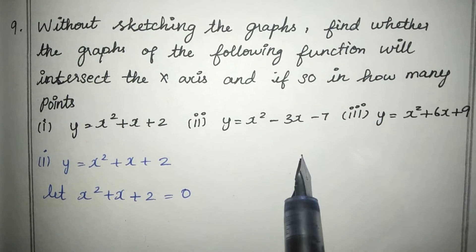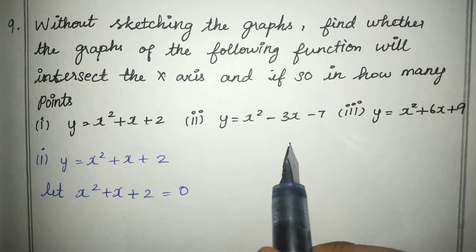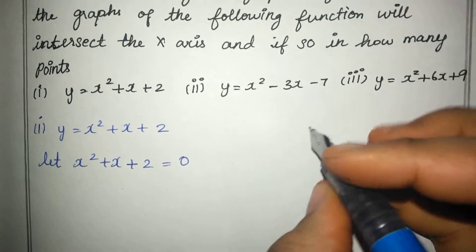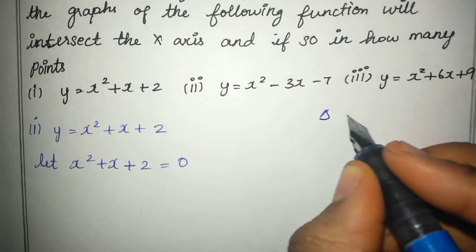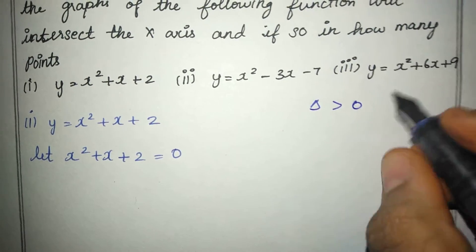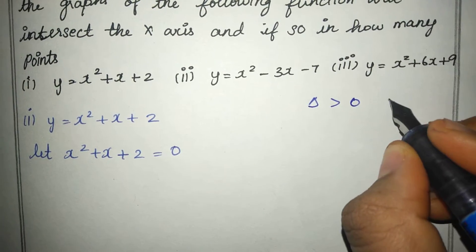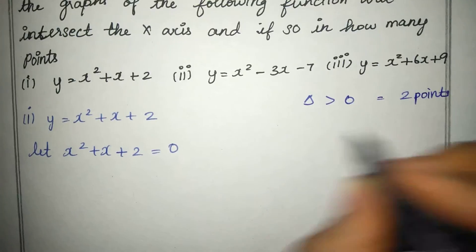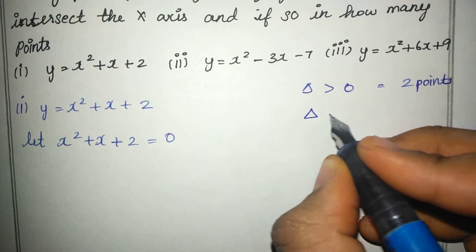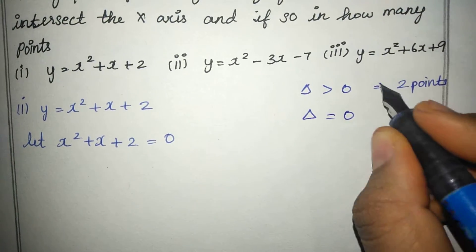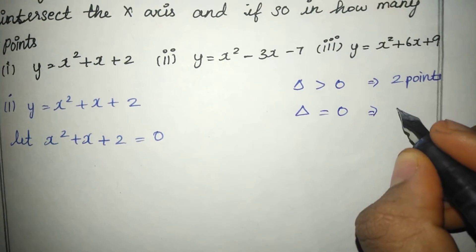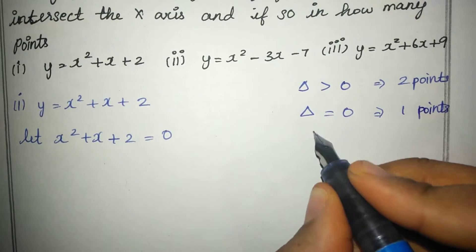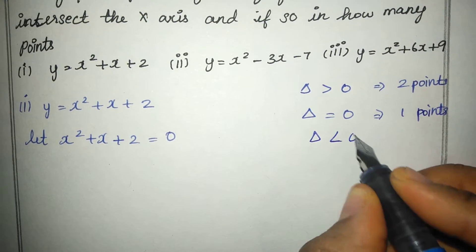The discriminant conditions are: if discriminant is greater than 0, the curve intersects the x-axis at two points; if discriminant is equal to 0, it intersects at one point; and if discriminant is less than 0, it does not intersect the x-axis.